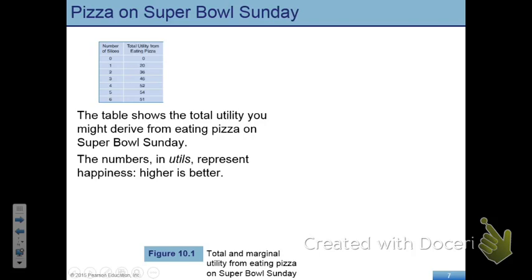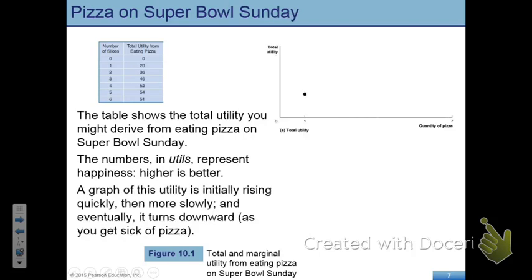This is an analytical chapter, but numbers always help. Consider an artificial example: for each slice of pizza you buy, you are given arbitrary numbers representing your total utility. When you buy zero, no utility. When you buy one, your utility is 20. When you buy two, it increases from 20 to 36. When you buy the sixth unit, your utility is 51. Notice that as you buy more slices of pizza, your total utility is going up. If we plot total utility with utility on the vertical axis and quantity on the horizontal, the utility curve is an upward-sloping line, but notice that the slope of this line is changing — the curve is concave.